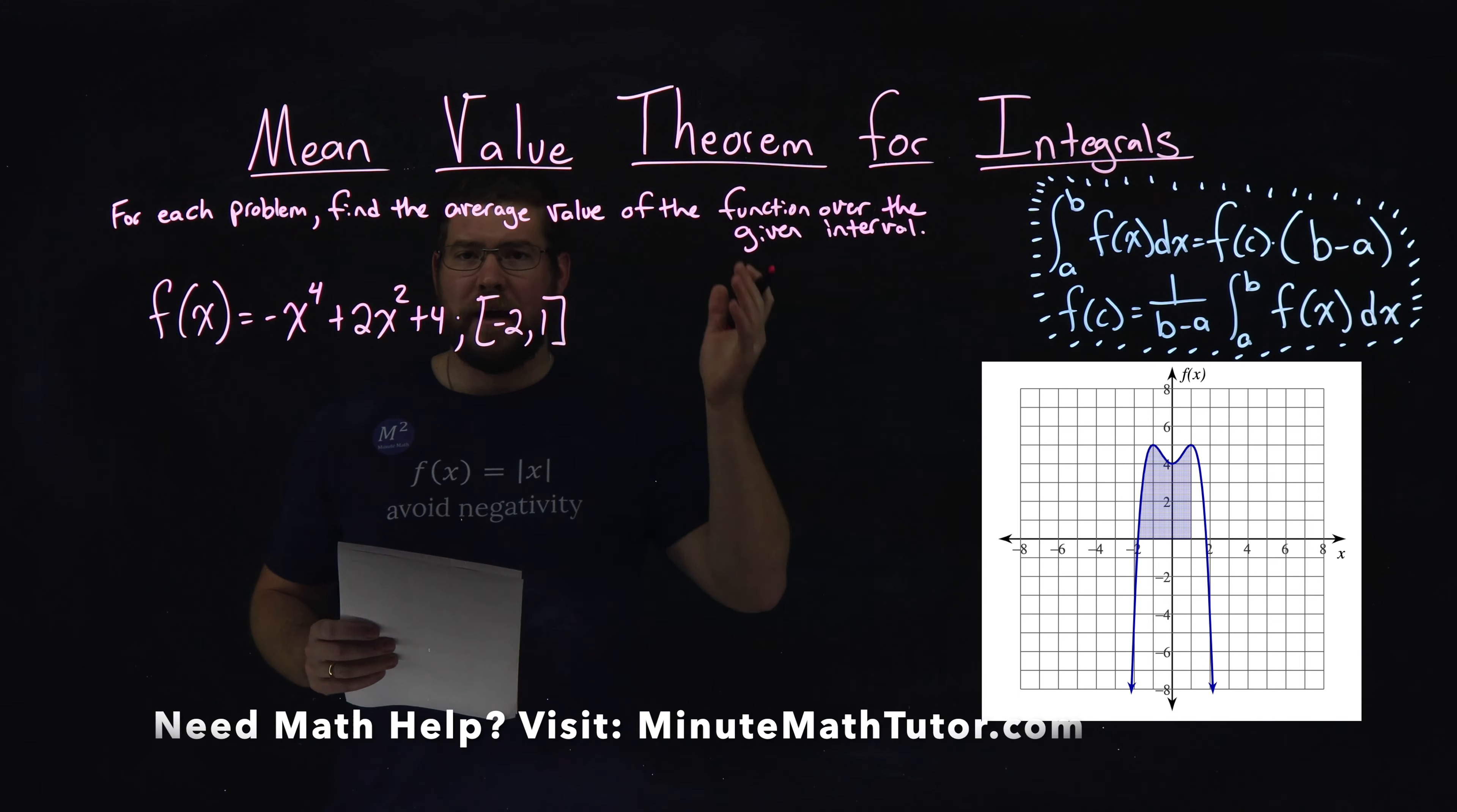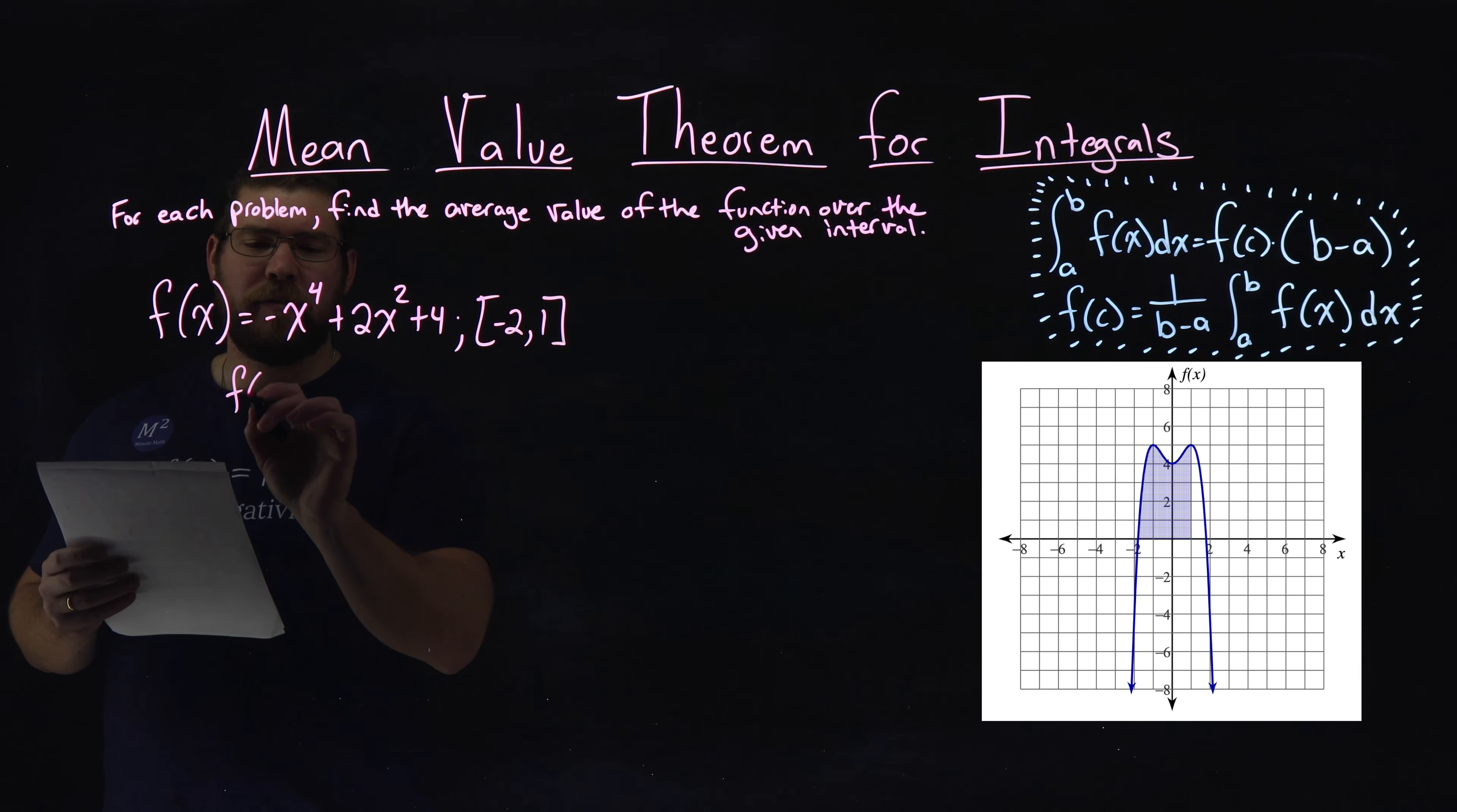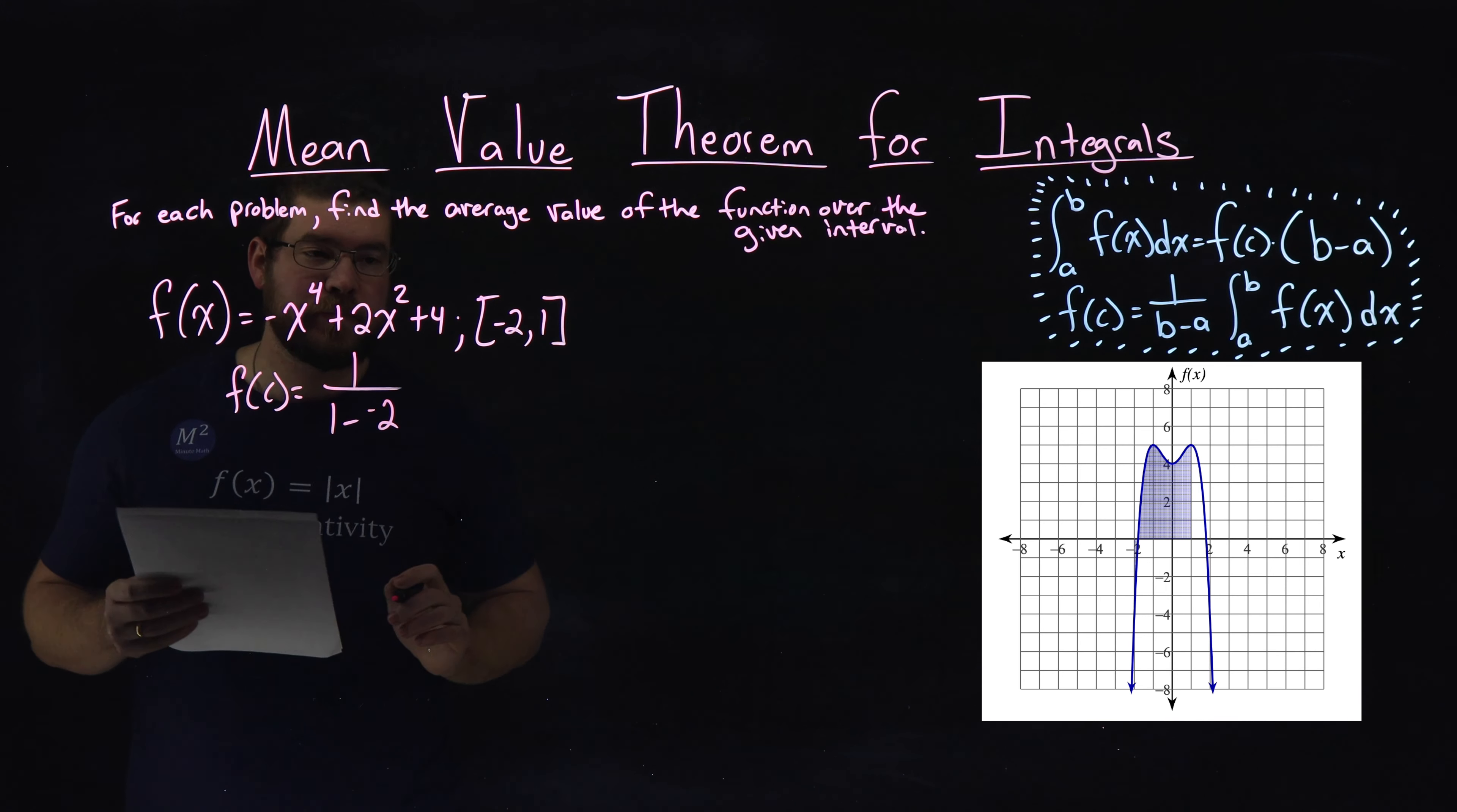Well, our rules tell us we have our formula for the mean value theorem for integrals. So let's go find f(c), the average value there. They tell us it's 1 over b minus a, b being the 1 here minus the a value of negative 2 on the interval.